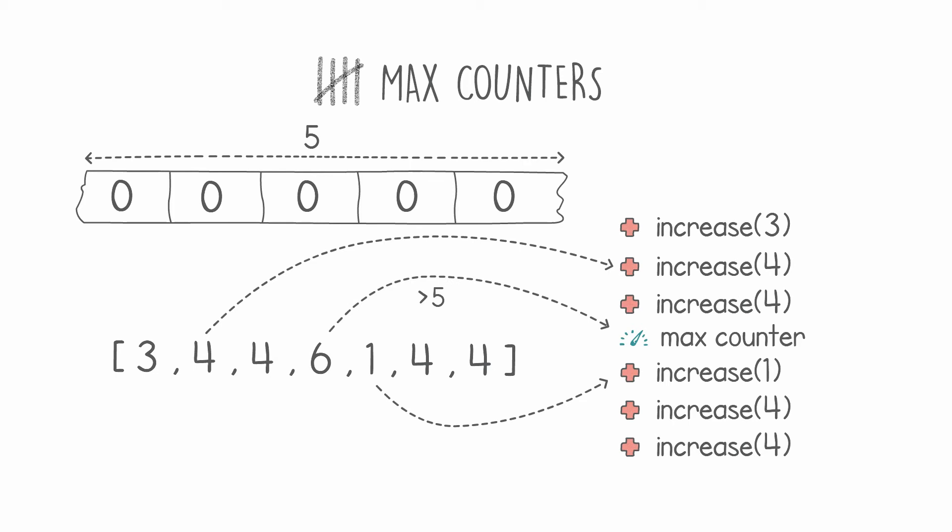The middle entry in our array, number 6, tells us to perform a max counter instruction. This is when the number in the array is bigger than the number of counters. In this case, we have 6, which is bigger than our number of counters, 5, so we understand this is a max counter.